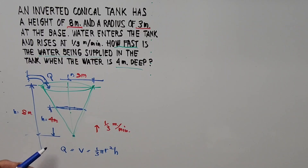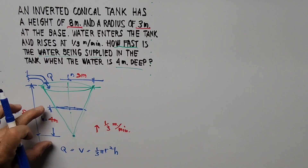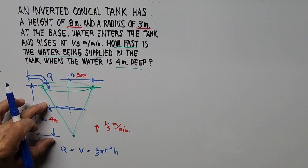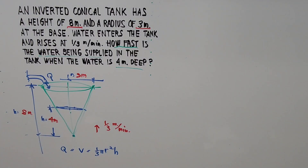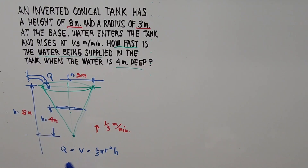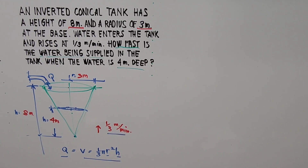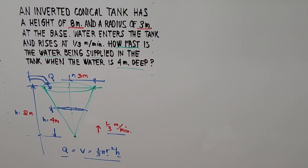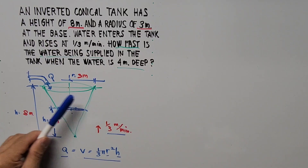How fast is the volume being supplied in the tank at this instance when the height of water in the inverted cone is 4 meters? To solve the problem, we have to connect the height and the radius into the formula of the volume, expressing r in terms of h. We'll use ratio and proportion and take the cross section of the inverted conical tank.